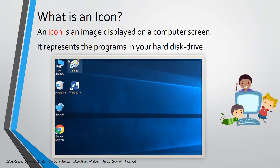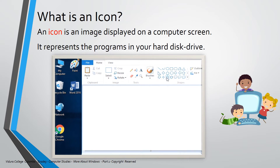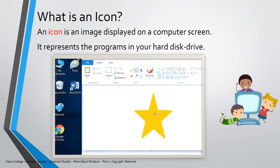Now I am going to double click on the Paint icon. The Paint program will be opened. Now you can draw on the screen as usual. Now I am going to fill the colors. I think you can understand. I am going to close the Paint program now.